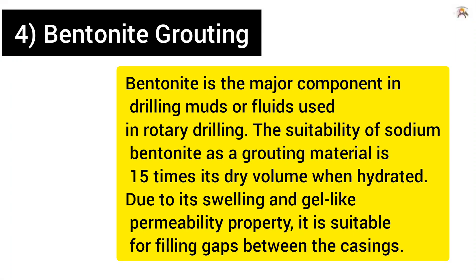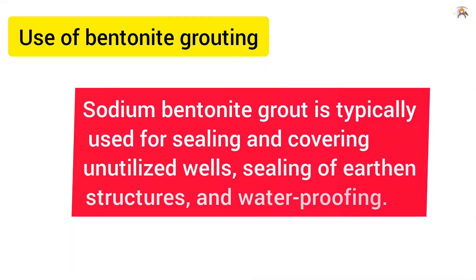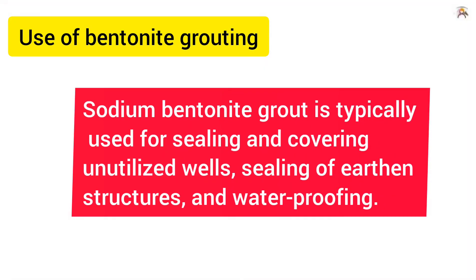4. Bentonite grouting. Bentonite is the major component in drilling muds or fluids used in rotary drilling. Sodium bentonite as a grouting material expands to 15 times its dry volume when hydrated. Due to its swelling and gel-like permeability property, it is suitable for filling gaps between the casings. Sodium bentonite grout is typically used for sealing and covering unutilized wells, sealing off earthen structures, and waterproofing.